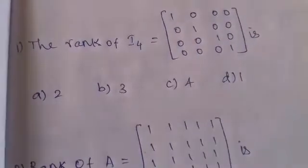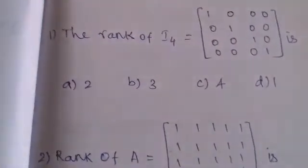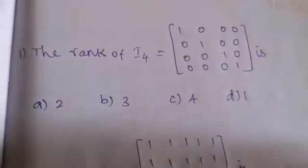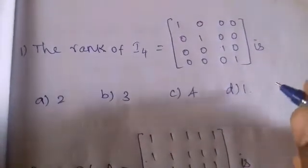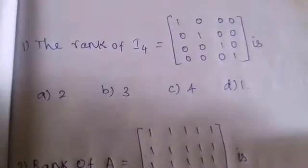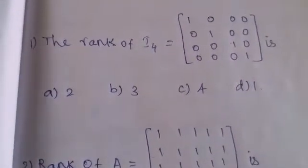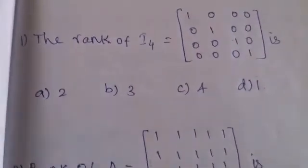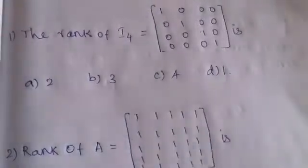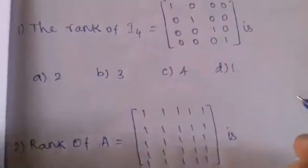The question is: find the rank of I₄, the 4×4 identity matrix. To find the rank of any matrix, we check the determinant. If the determinant of the matrix is equal to 0, we reduce the order. If the determinant is not equal to 0, then the order of the matrix is the rank.